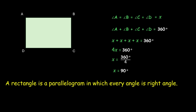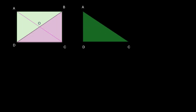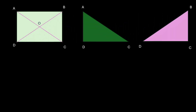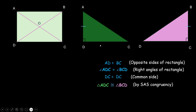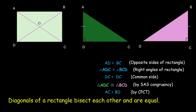Another property is related to diagonals. Let us draw the diagonals intersecting at O again. If we take triangle ADC and triangle BDC, we can see that AD is equal to BC — these are opposite sides of the rectangle. Angle D is equal to angle C, both being right angles, and DC is the common side. So these two triangles are congruent by SAS congruency criteria, which gives us that side AC is equal to side BD by CPCT. AC and BD are the diagonals, so in a rectangle the diagonals bisect each other and are equal.